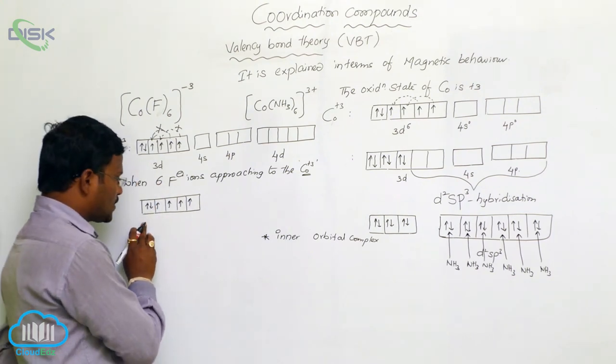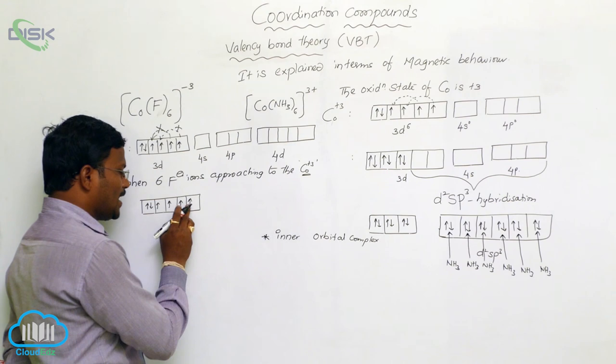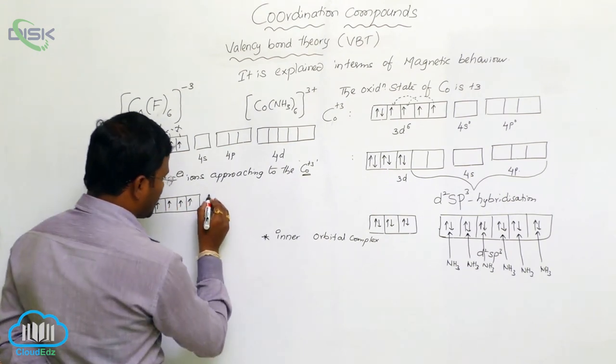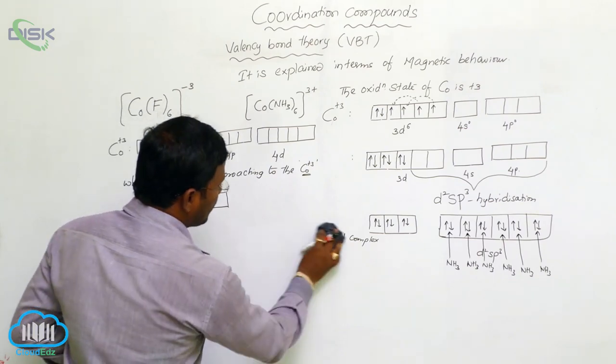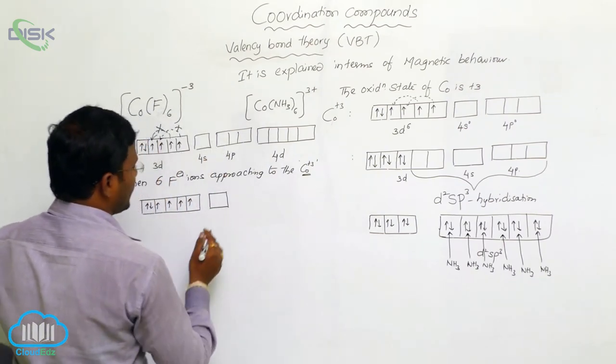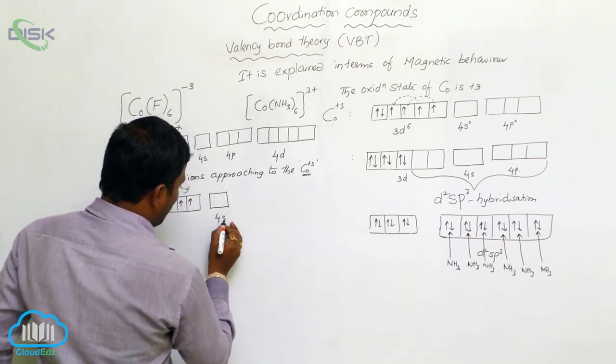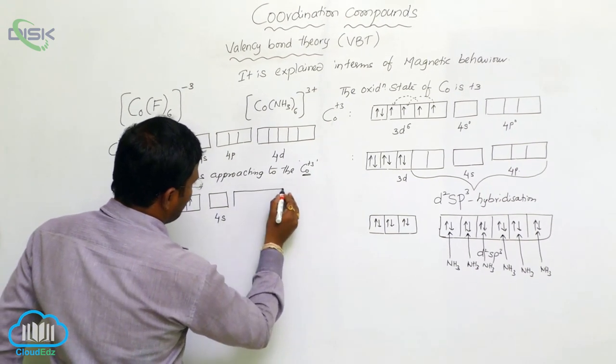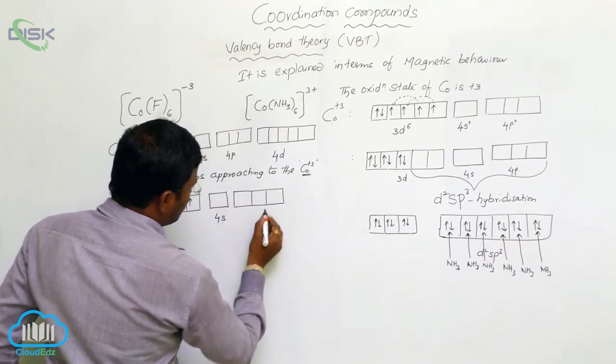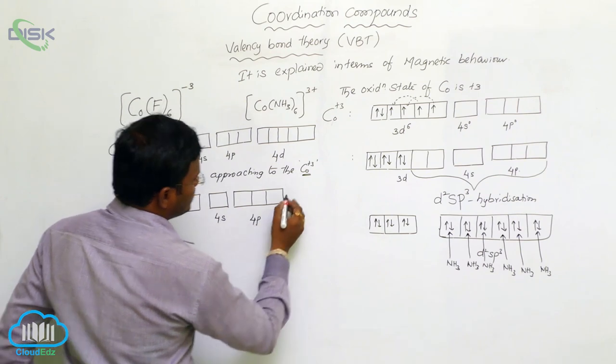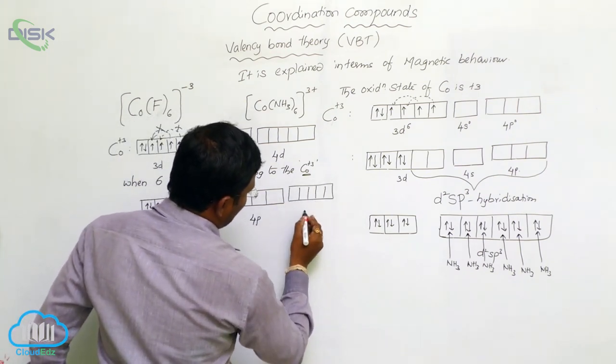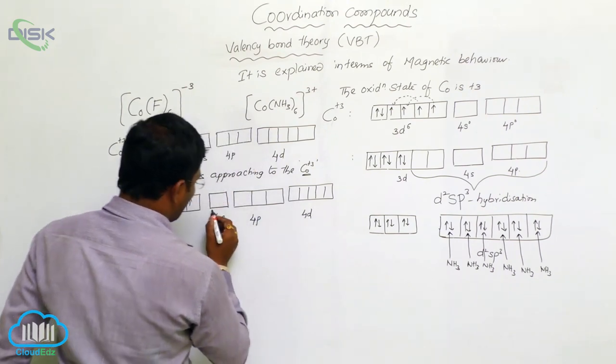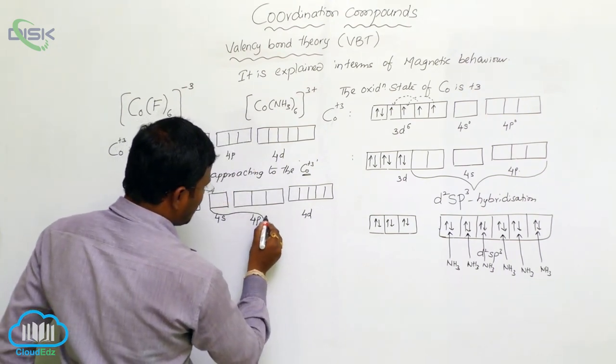In such cases, to facilitate bond formation with 6 fluorines, here, one 4s orbital and three 4p orbitals and two 4d orbitals wants to participate in hybridization.